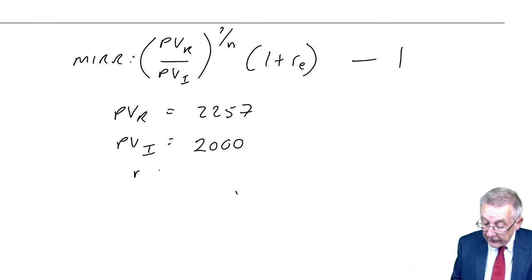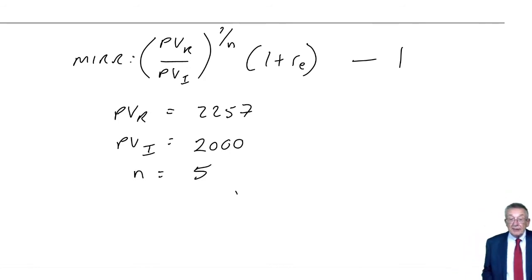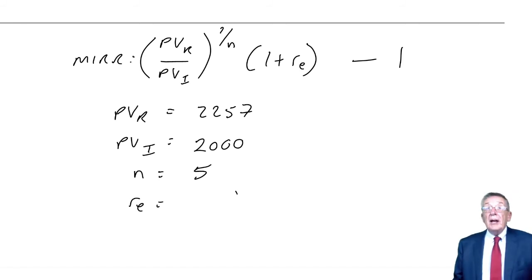N is the life of the project. This project was 5 years, so N is 5. And RE is the cost of capital. In our original question 1, the cost of capital was 10%, 0.1.